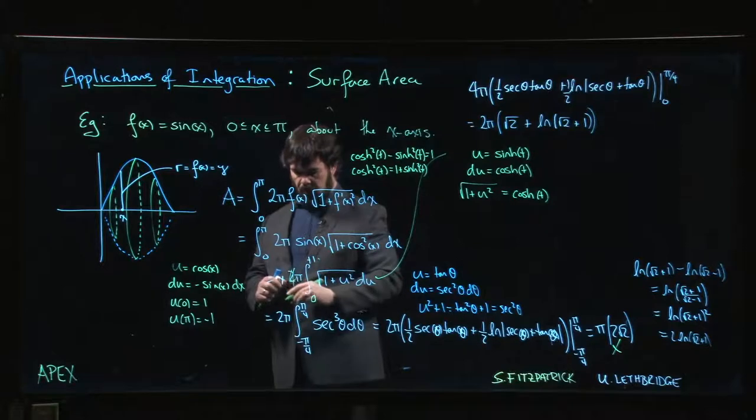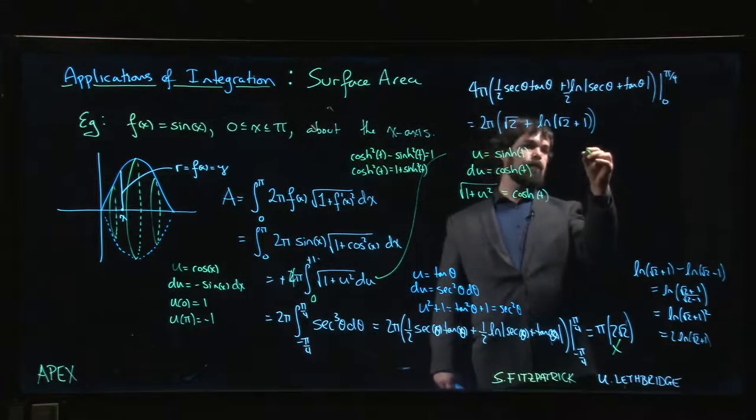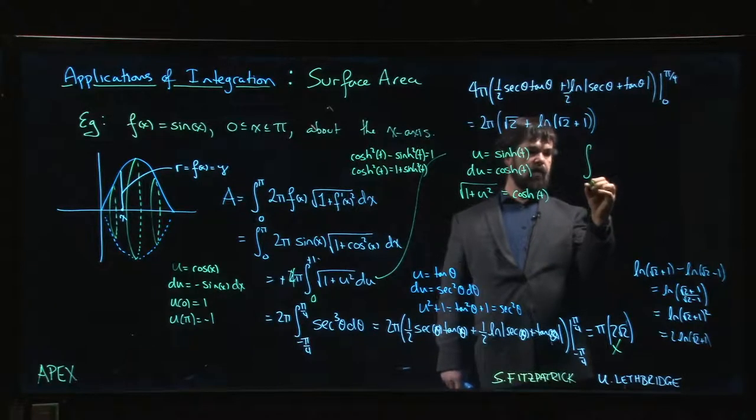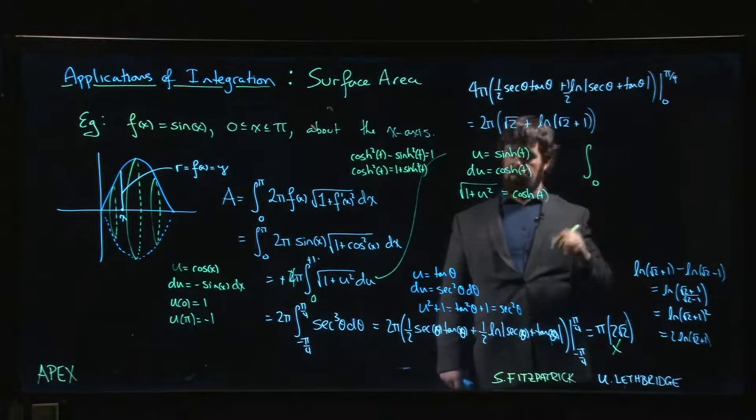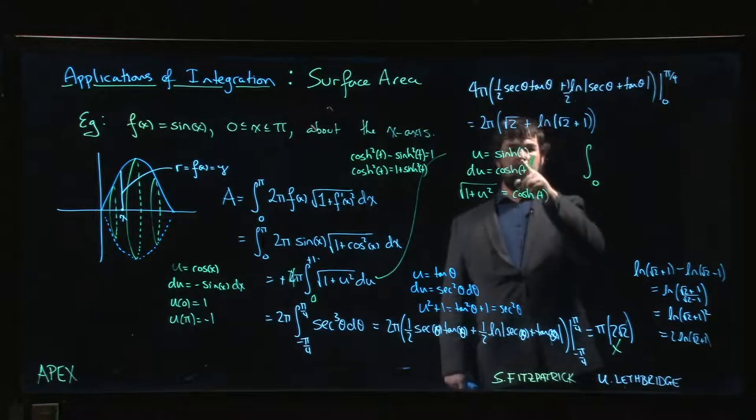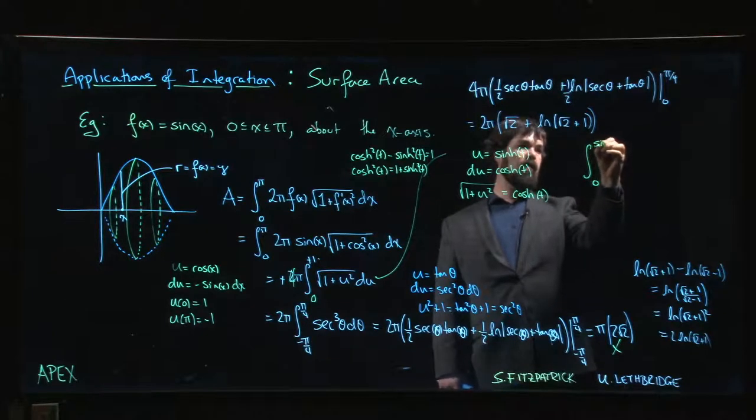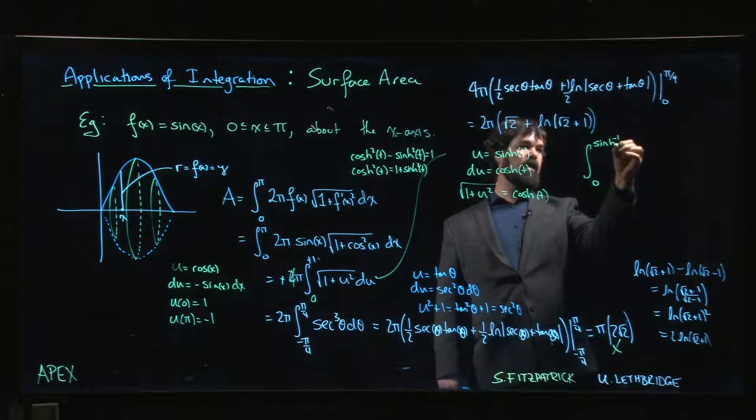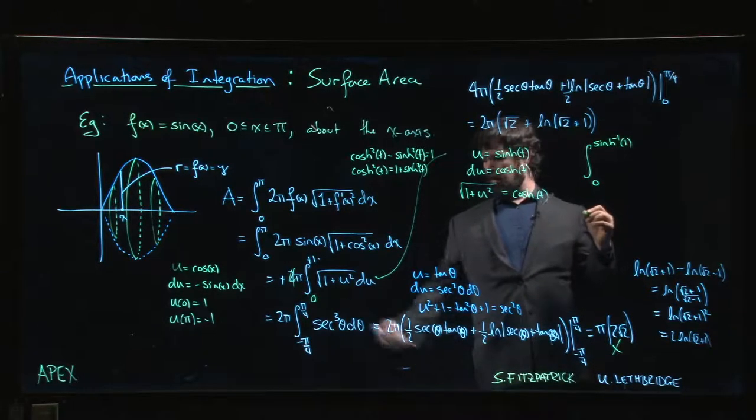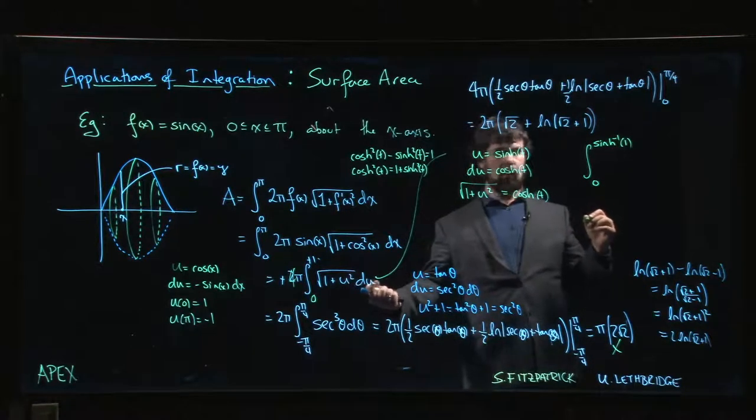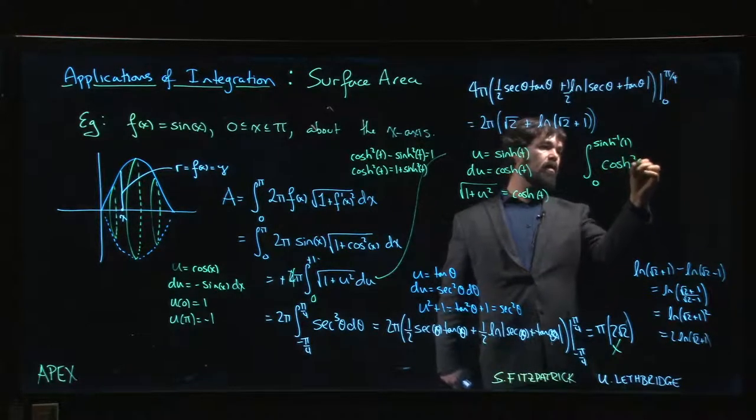What we get is the integral from zero (hyperbolic sine of zero is zero) to hyperbolic sine inverse of one. We've got to figure out what value of t gives us hyperbolic sine equal to one. This becomes hyperbolic cos squared t dt.